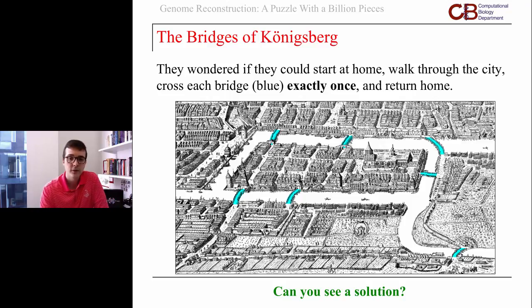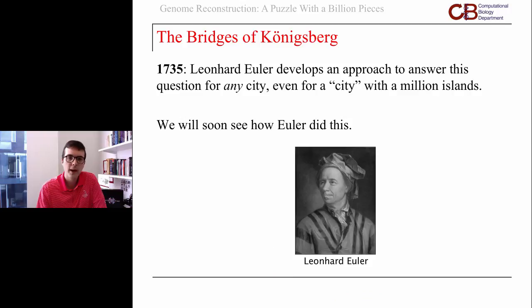Maybe you can see a solution. They were unable to find one, but maybe you see one. What actually happened was they wrote to famous mathematician Leonhard Euler in 1735 and asked him what he thought, because they said we cannot find one.